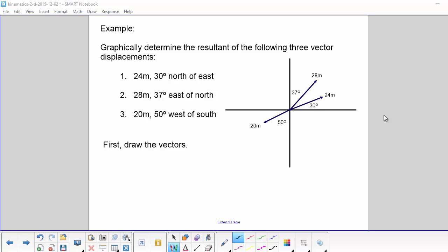First, draw the vectors, paying special attention to the direction. So the first vector was 24 meters and it was 30 degrees north of east. So we start from east and 30 degrees north of that is our angle.